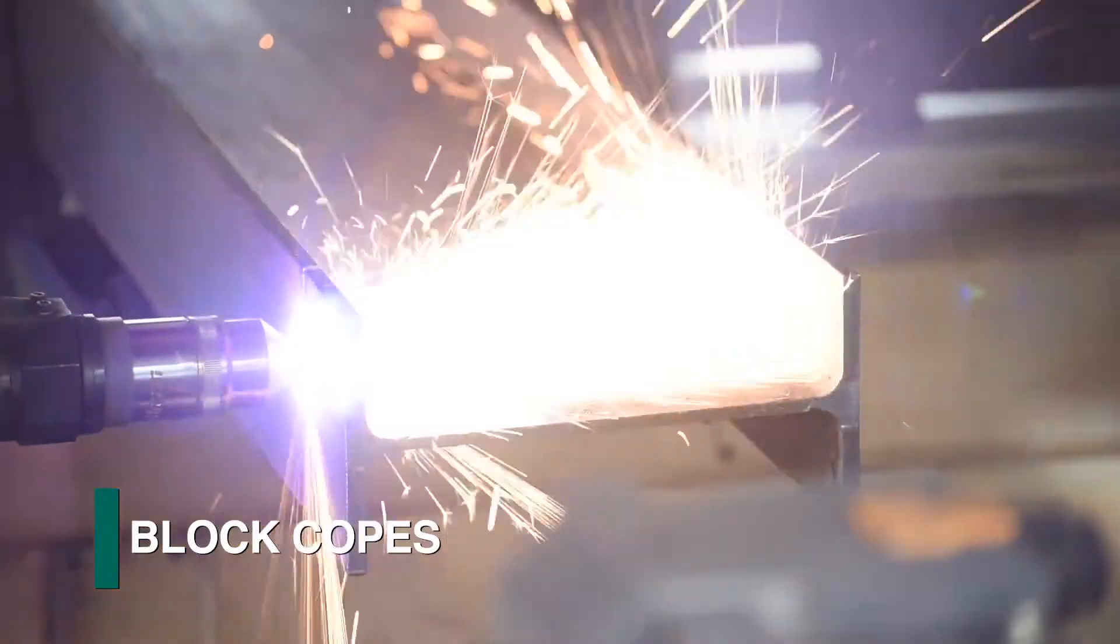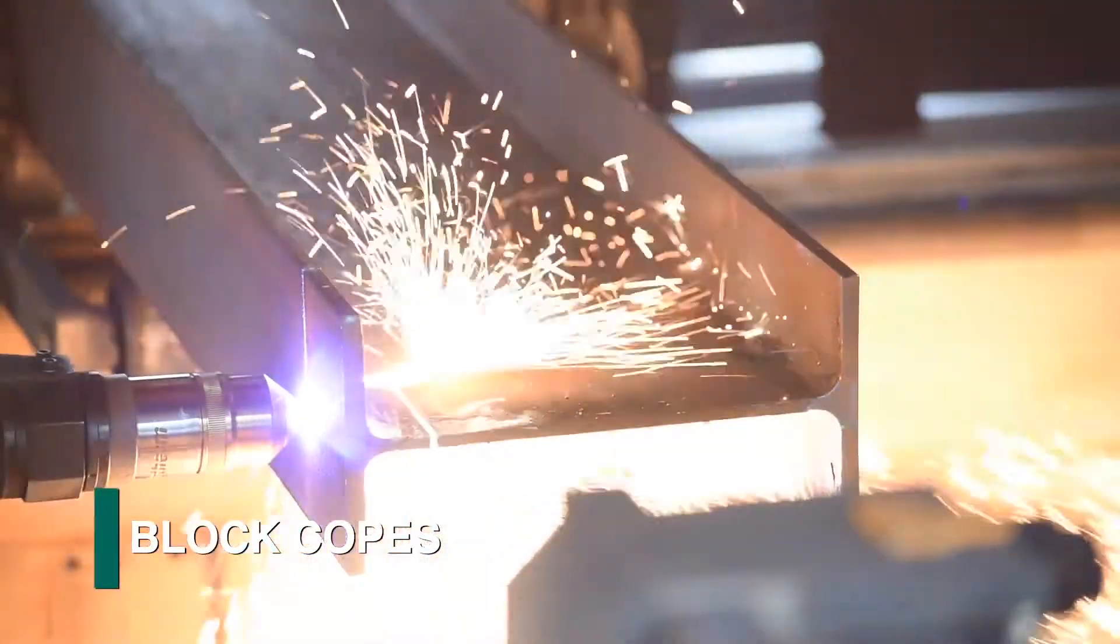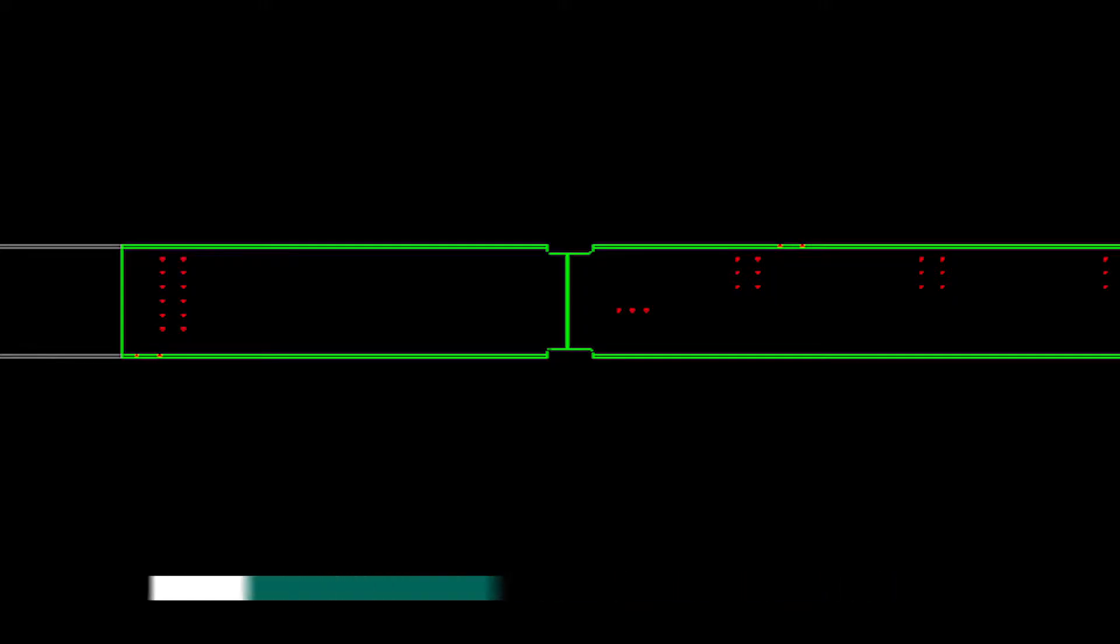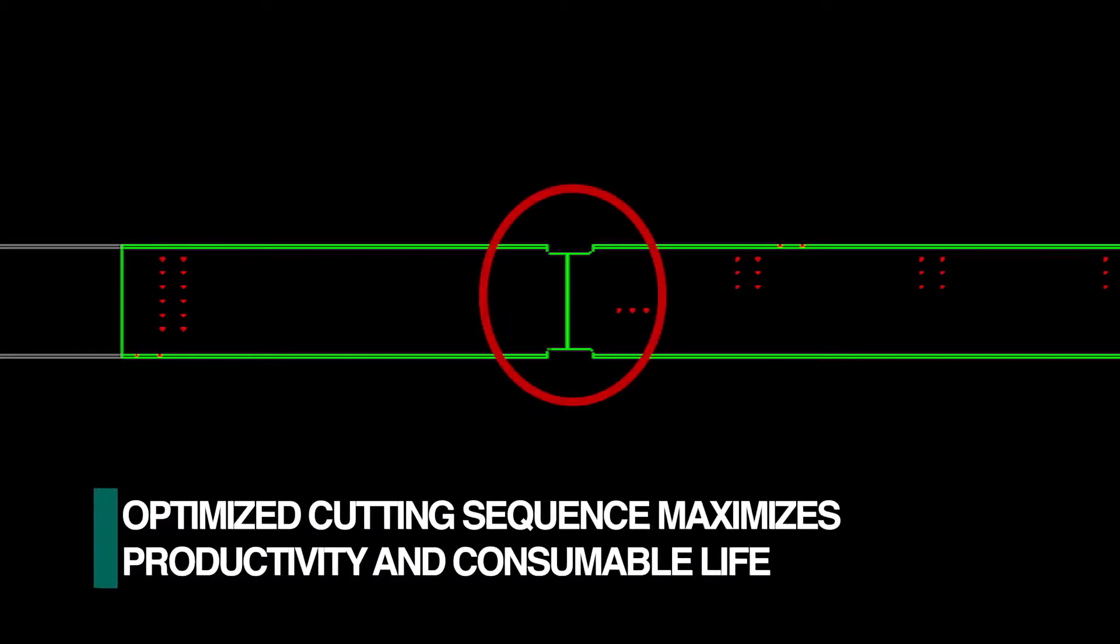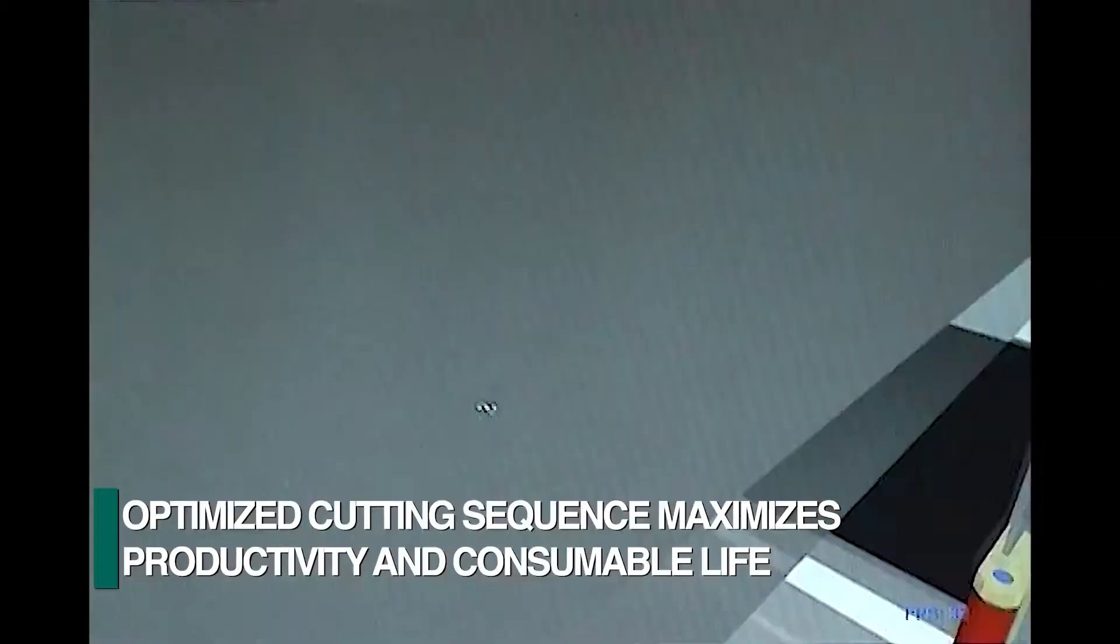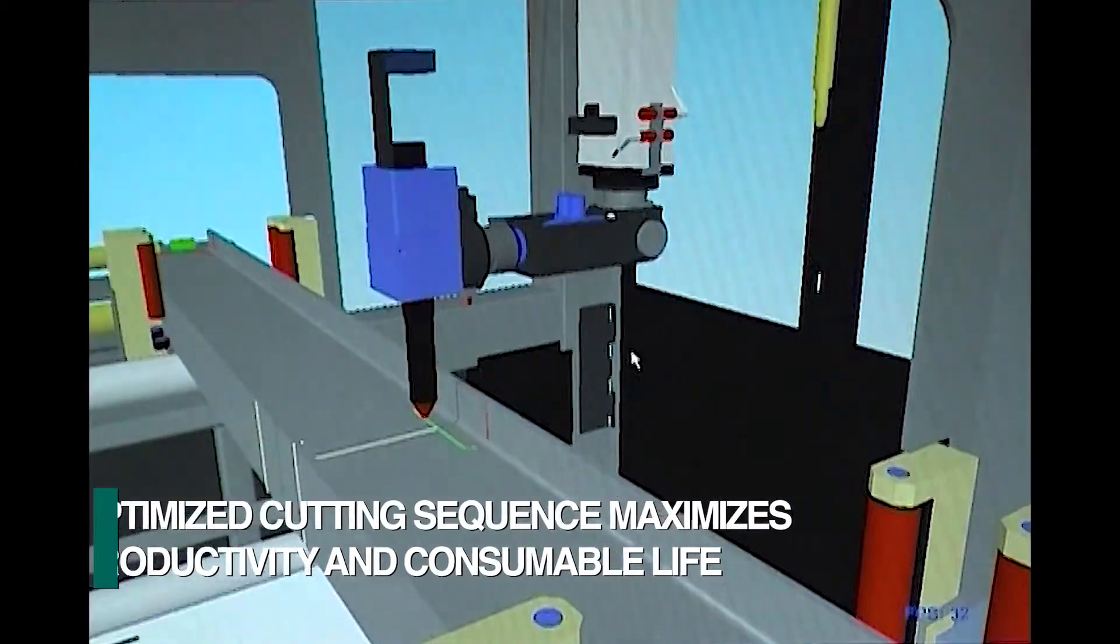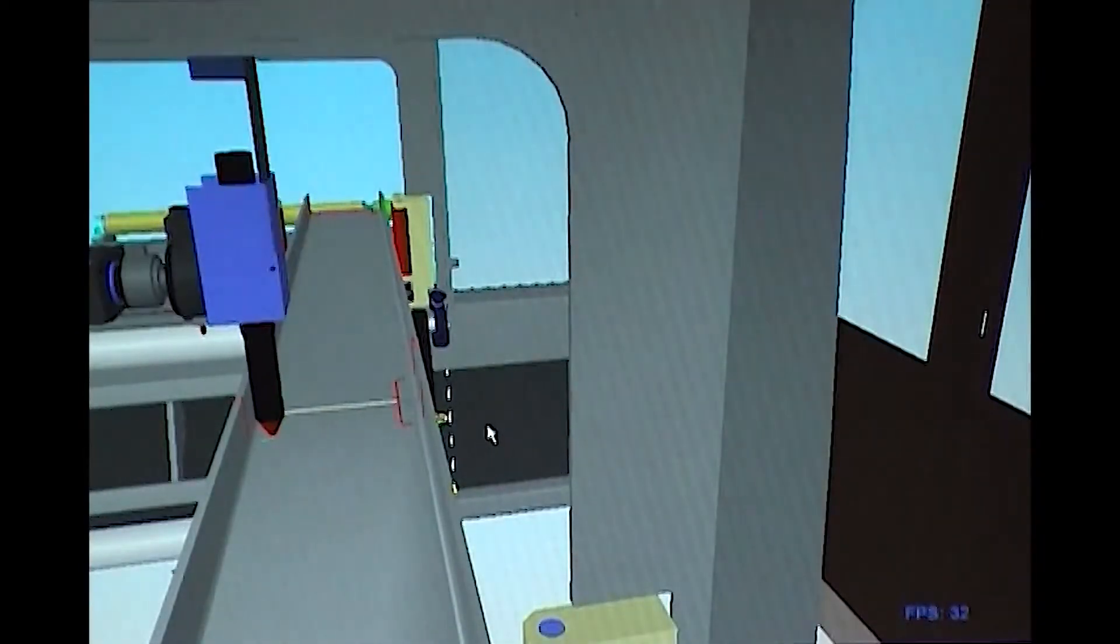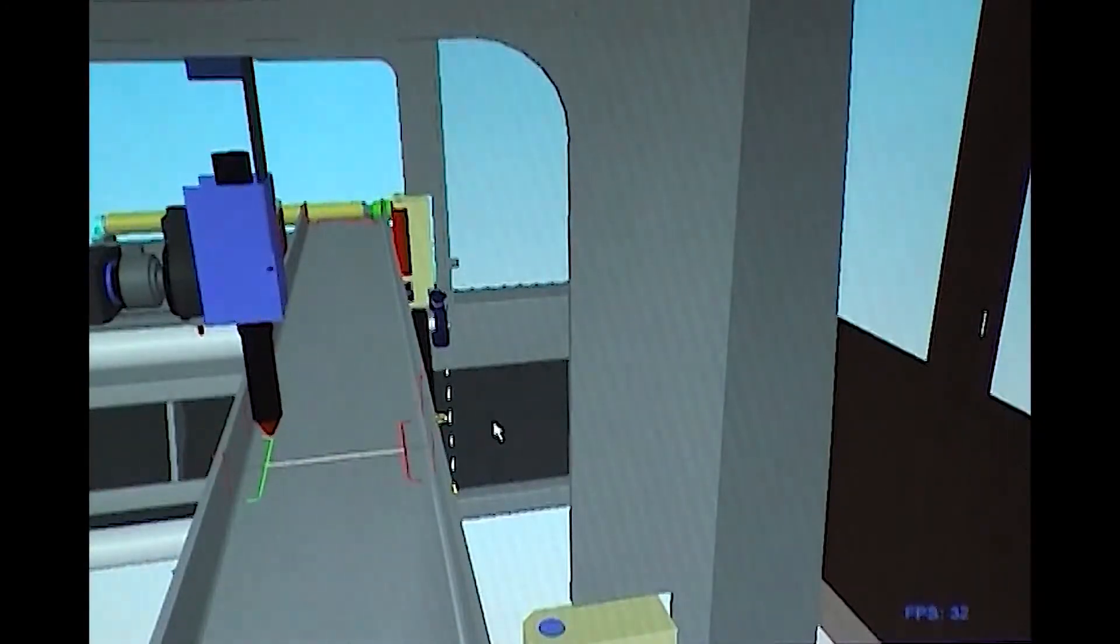Copes for end connections, such as coping the flanges or typical block copes, are executed with great ease and productivity. The powerful nesting software combines the trailing end cope of one beam with the leading end cope of the next beam in just one cycle to maximize consumable life and productivity, rather than address each cope as a separate routine.